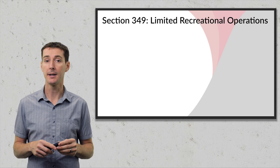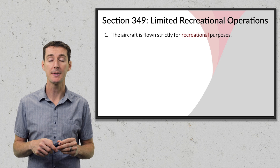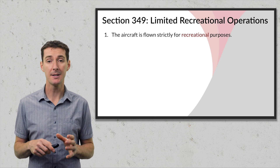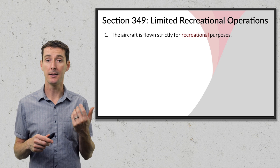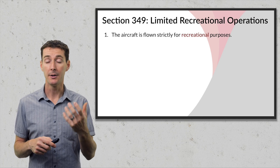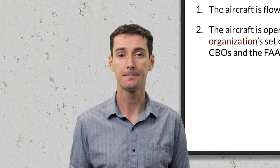Limitation number one has been in place since day one under Section 336: the aircraft must be flown strictly for recreational purposes. If you're doing anything other than flying for fun, this does not apply — you have to follow regulations under Part 107.